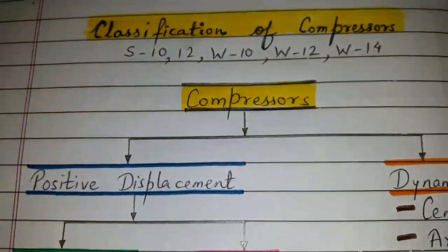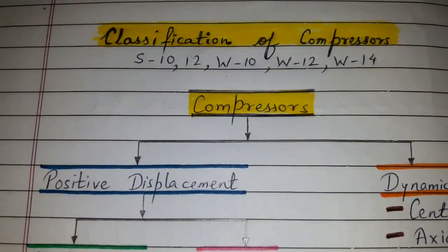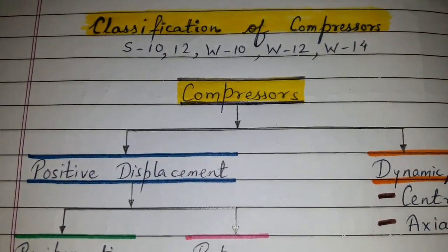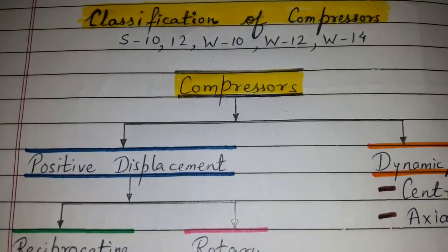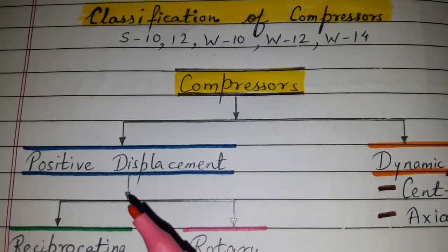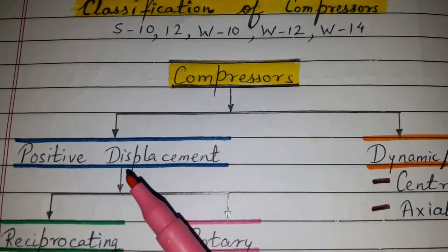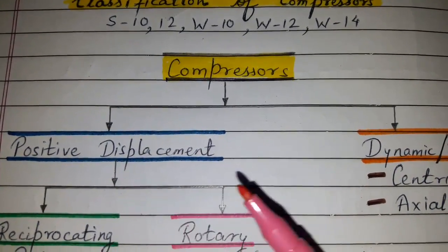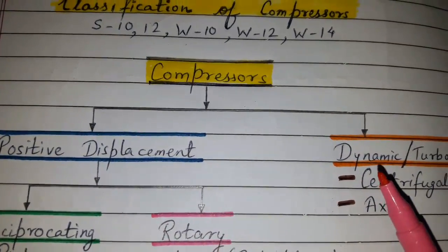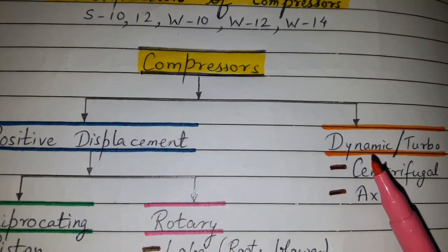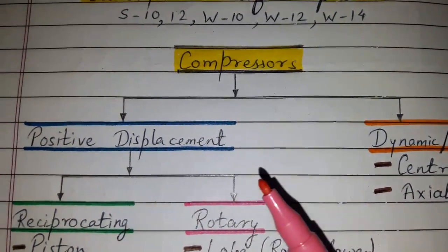Today's topic of discussion is classification of compressors. Compressors can be classified as positive displacement compressors and dynamic or turbo compressors.